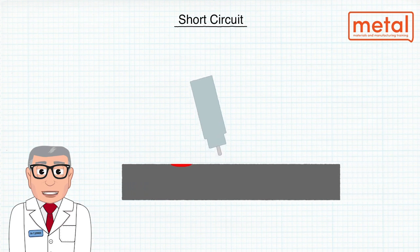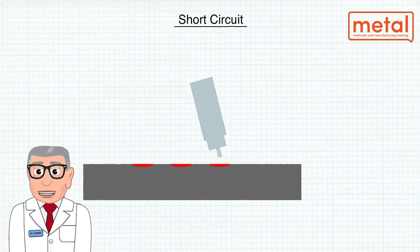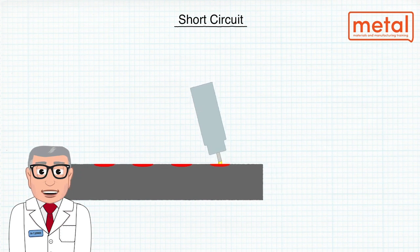In this mode, the electrode is feeding at such a high relative rate that the molten tip will periodically come into contact with the molten weld pool. This short circuit creates a bridge across the gap between the electrode and the molten pool and the arc is extinguished.